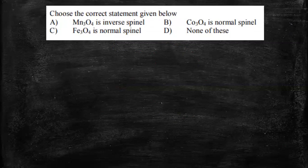So this is the next question. Choose the correct statement given below. Mn3O4 is an inverse spinel. Co3O4 is a normal spinel. Fe3O4 is a normal spinel. None of these. So we need to find the correct statement. In order to find this correct statement, we need to know what is inverse spinel and what is a normal spinel.